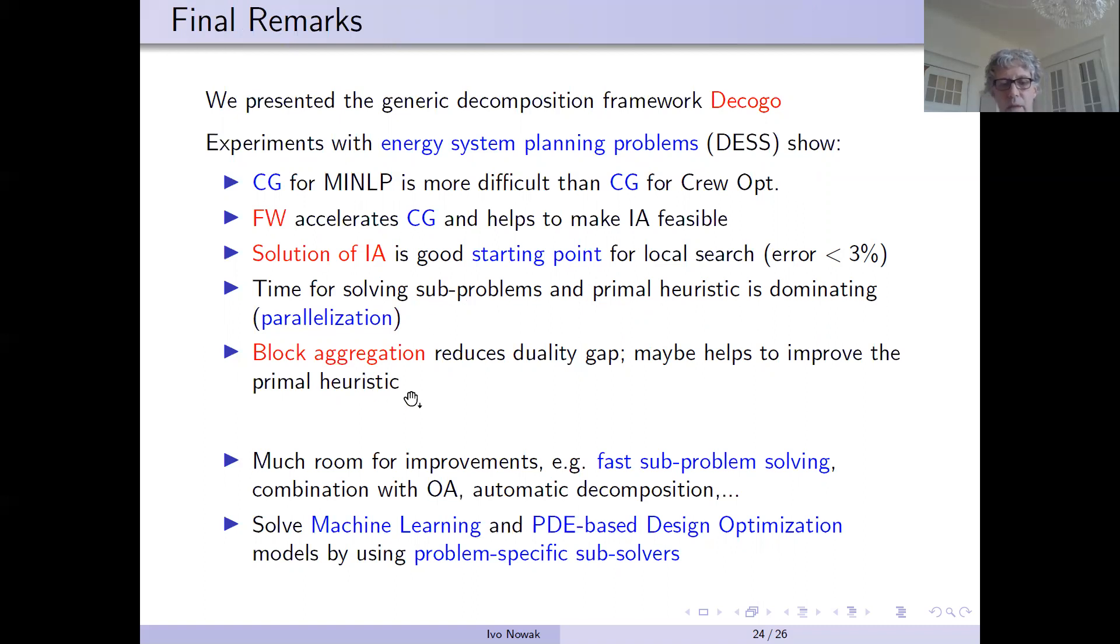Block aggregation, which was implemented by Ouyang, greatly reduced the duality gap. Now we are interested if this also helps to improve the primal heuristic.